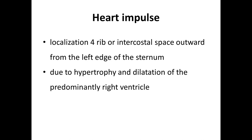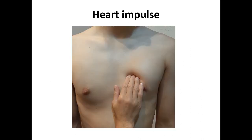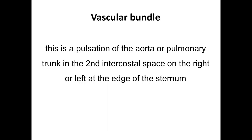The heart impulse is different from the apical impulse: it is localized on the fourth rib or fourth intercostal space, outward from the left edge of the sternum. It may develop due to hypertrophy and dilation of the right ventricle. Normally there is no heart impulse. Here I demonstrate how to palpate the heart impulse on the fourth intercostal space on the left side of the sternum.